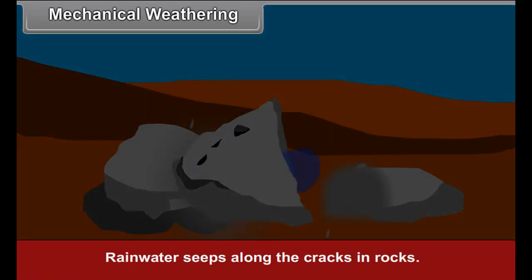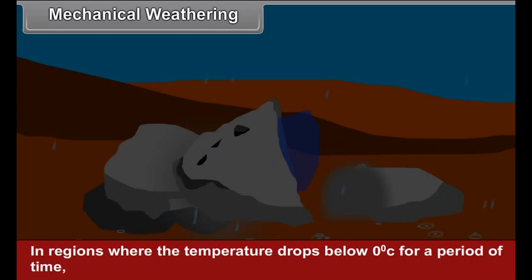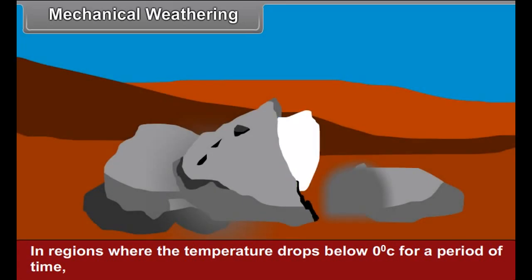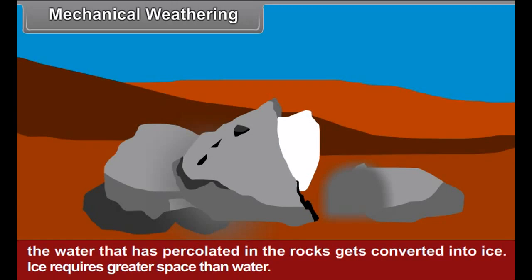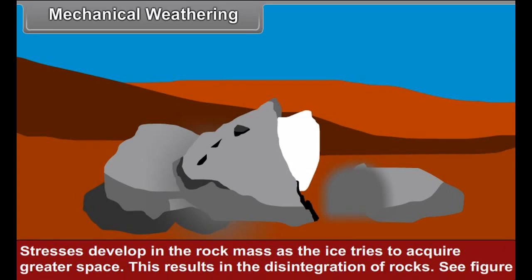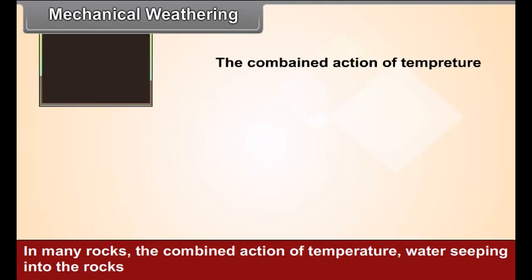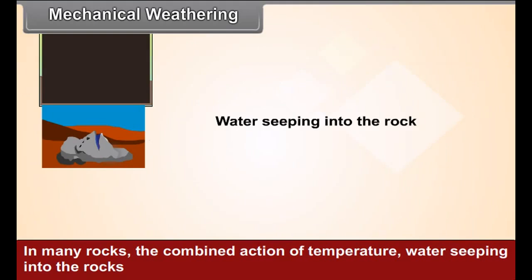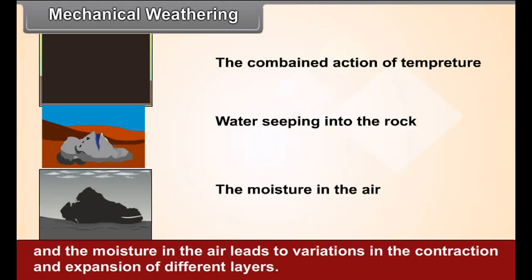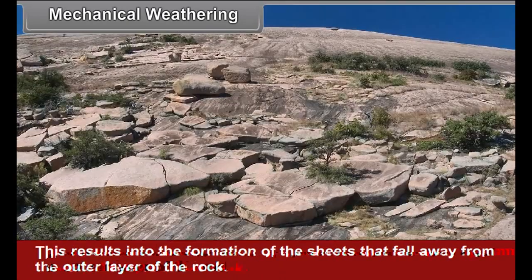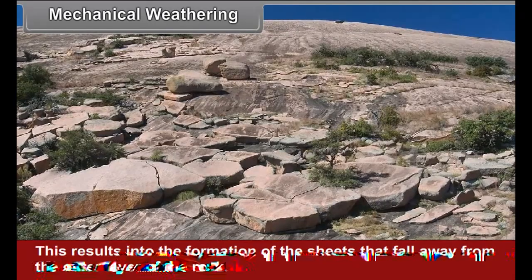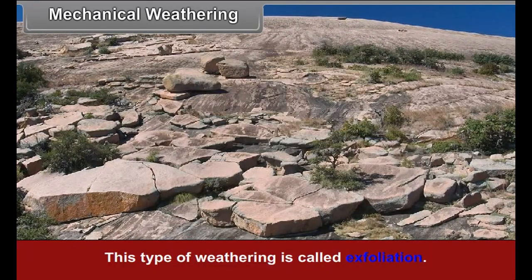Rain water seeps along the cracks in rocks. In regions where the temperature drops below 0°C for a period of time, the water that has percolated into the rocks gets converted into ice. Ice requires greater space than water, so stresses develop in the rock mass as the ice tries to acquire greater space. This results in the disintegration of rocks. In many rocks, the combined action of temperature, water seeping into the rocks, and moisture in the air leads to variations in the contraction and expansion of different layers. This results in the formation of sheets that fall away from the outer layer of the rock — this type of weathering is called exfoliation.